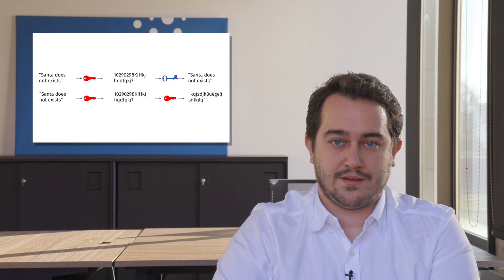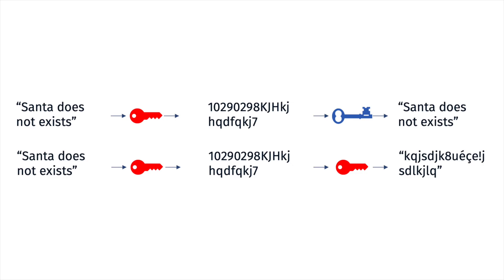For example, let's take a look at what happens with the secret 'Santa does not exist.' If we encrypt this secret with a red key, it leads to a text that is meaningless. But if we decrypt this text with a blue key, we can see our original text again. However, if we encrypt this secret with a red key and decrypt it with a red key again, it still remains a meaningless piece of text.